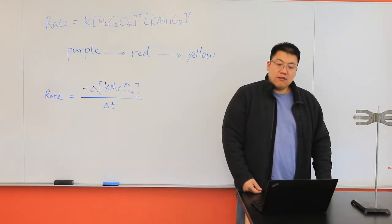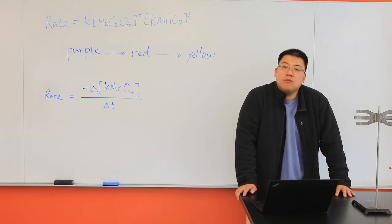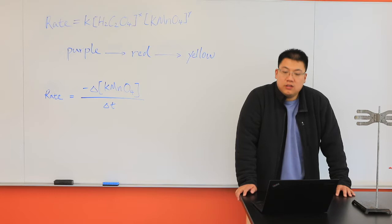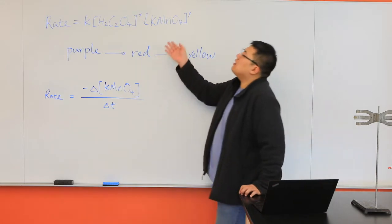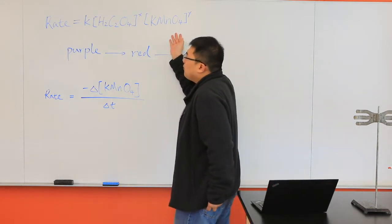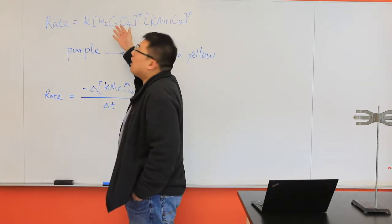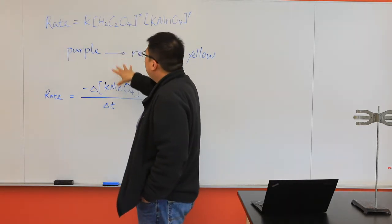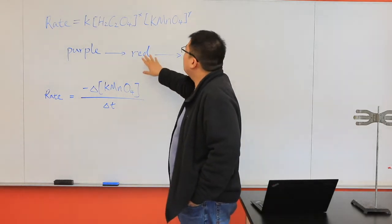Also, if the reactant and the product are differently colored, we can watch the reaction mixture change color as the colored reactant disappears and the product concentration increases. So the color of the potassium permanganate is purple. When it's first mixed with the colorless oxalic acid, it's still purple. After a few seconds, the reaction will turn from purple to red.